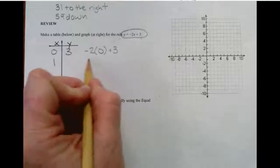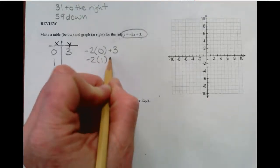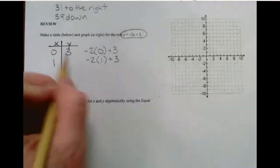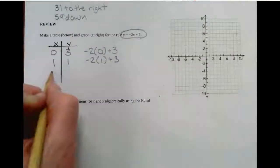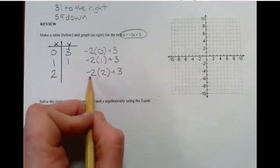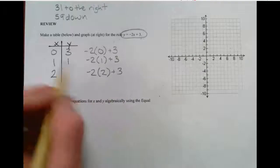So I'm going to start with 0. If I put 0 in, I have negative 2 times 0 plus 3. So that's going to be 3. If I put 1 in, I have negative 2 times 1 plus 3. So that's going to be 1. If I put 2 in, negative 2 times 2 plus 3. So that's going to be negative 4 plus 3 is negative 1.